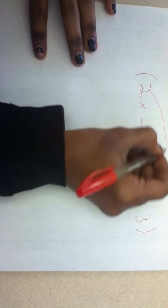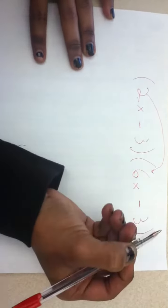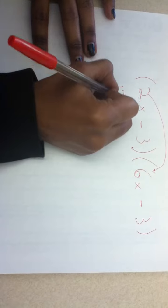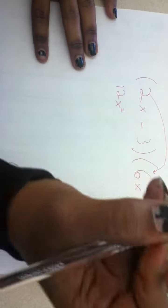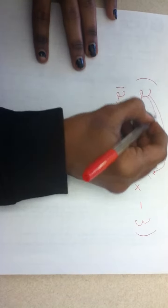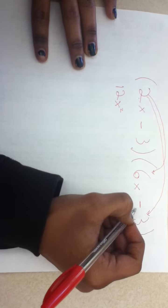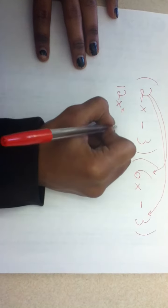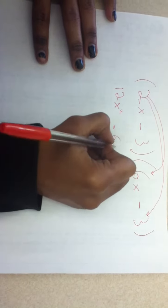So the first step is 2x times 6x, which will give us 12x squared. The next step is 2x times negative 3, which will give us negative 6x.